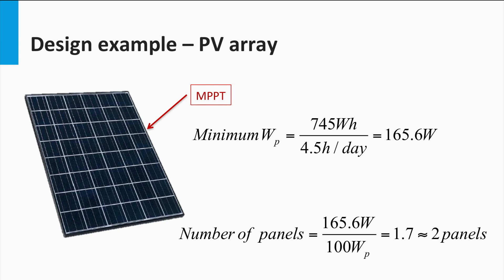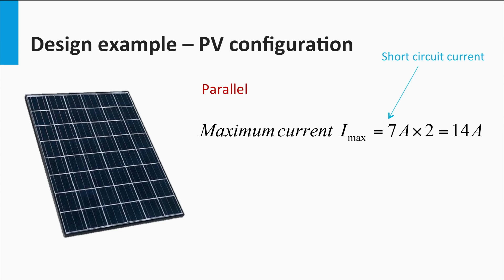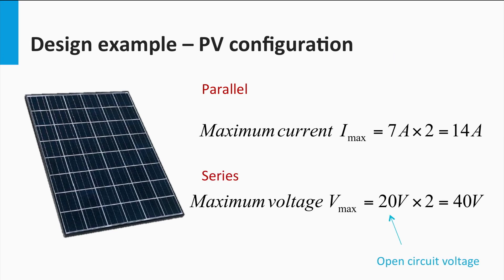The number of panels can be calculated, which in this case is found to be 2, as the number of panels is always rounded up to a whole number. Now let us look at the possible PV configurations. If the two panels are connected in parallel, then a maximum current of 2 times the short-circuit current is possible, which in this case is 14 amps. On the other hand, if the two panels are connected in series, then a maximum voltage of 2 times the open-circuit voltage is possible, which equals 40 volts.